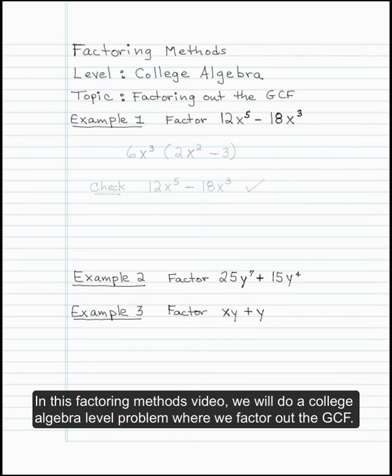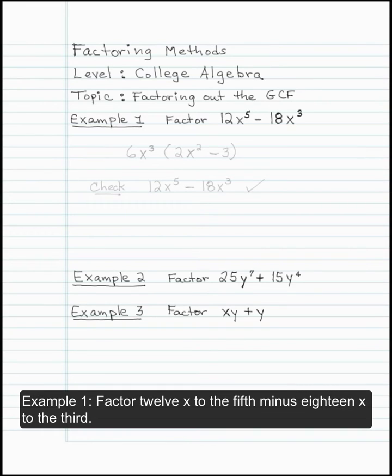In this factoring methods video, we will do a college algebra level problem where we factor out the GCF. Example 1: factor 12x to the 5th minus 18x to the 3rd.